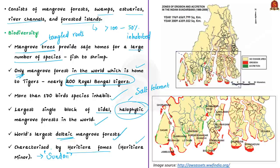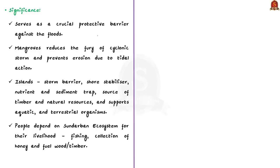Another reason given for the name Sundarbans is that it is a beautiful forest, where 'Sundar' means beautiful and 'Ban' means forest. Apart from its biodiversity, Sundarbans also serves as a crucial protective barrier against floods for the inhabitants in and around Kolkata. These floods result from cyclones, which are a regular occurrence in the region. The mangroves in Sundarbans also reduce the fury of cyclonic storms and prevent the erosion caused by tidal action.